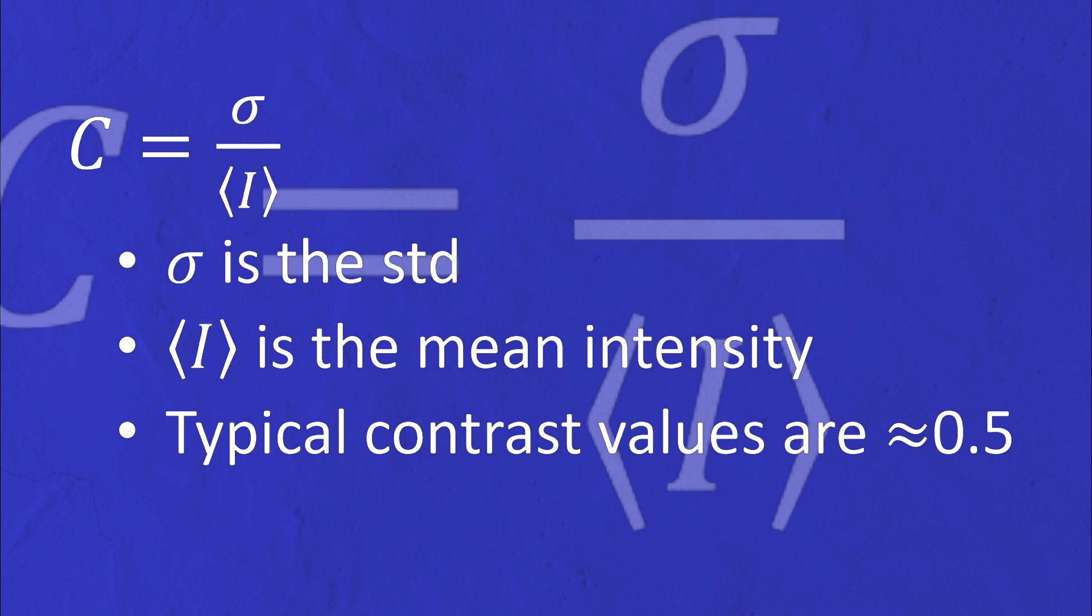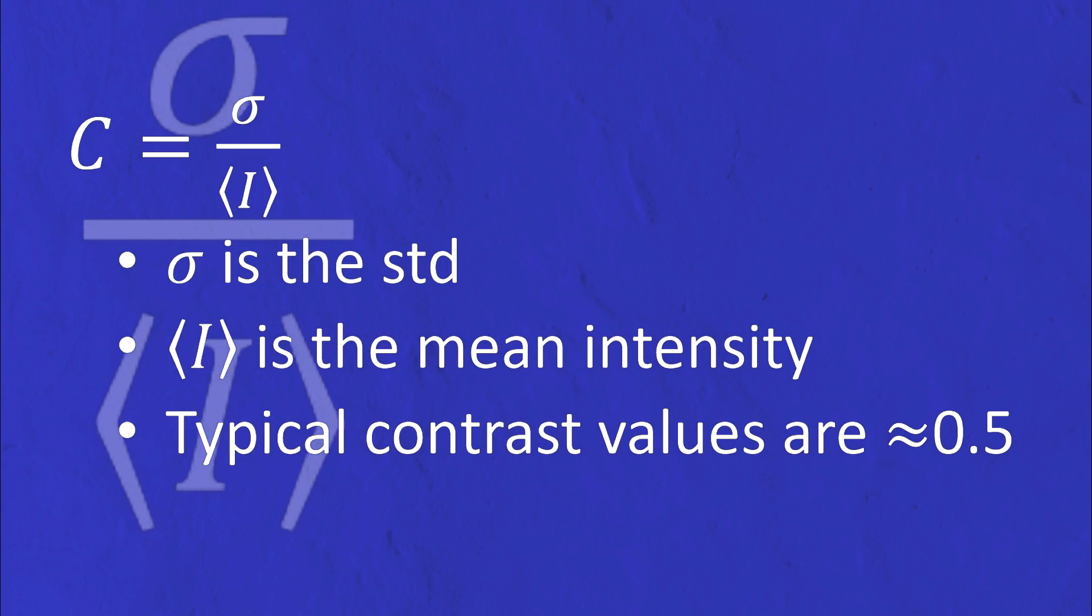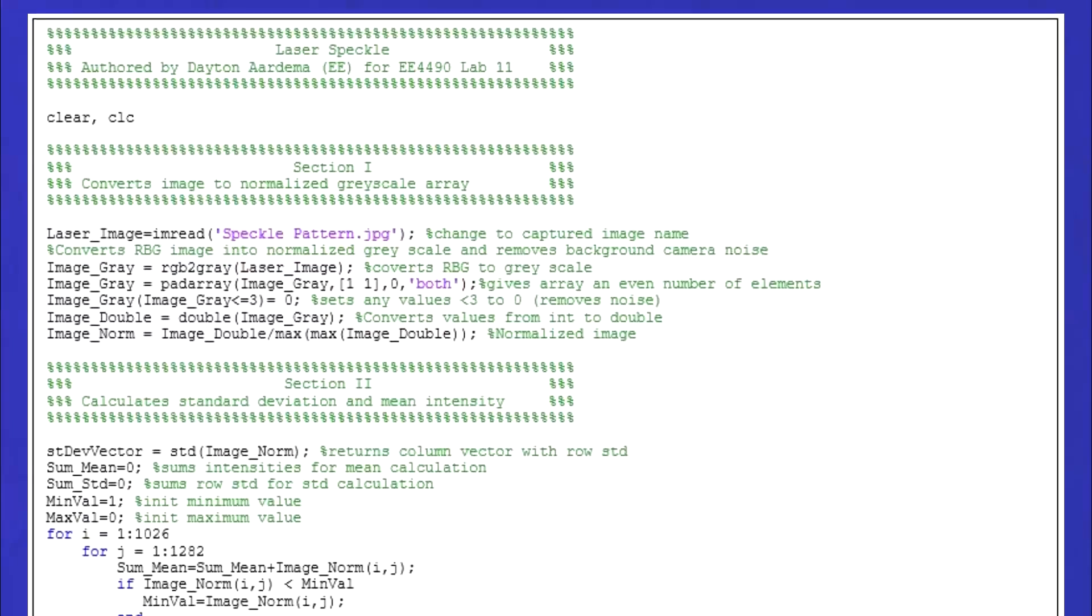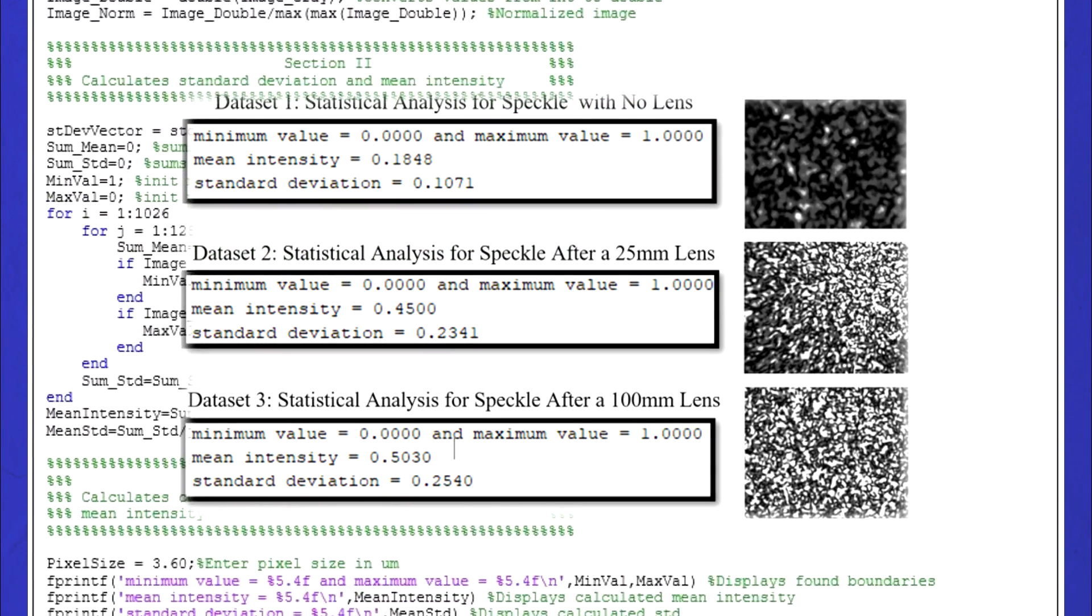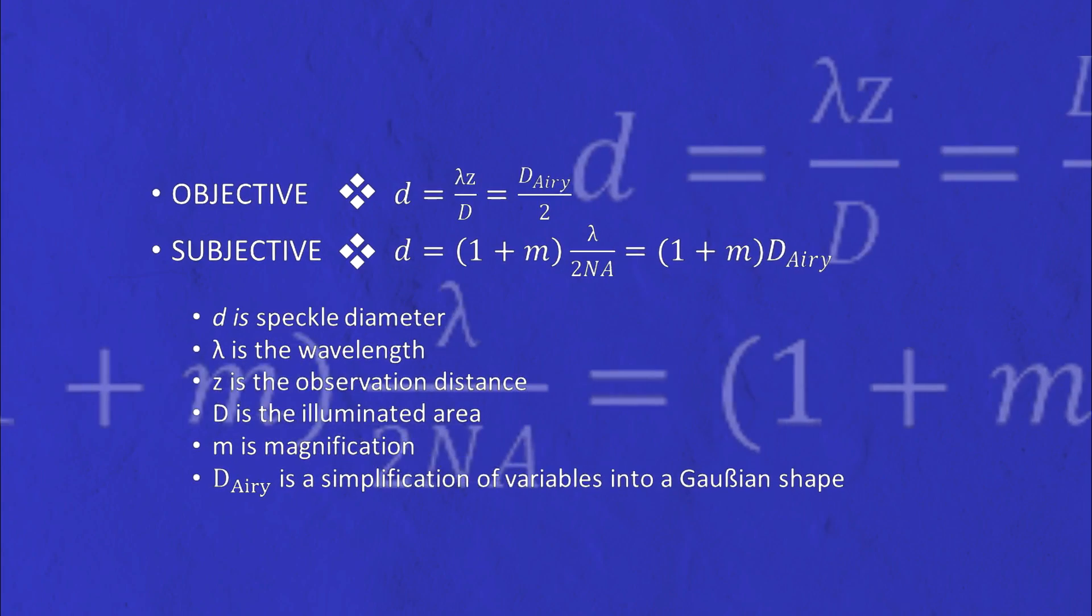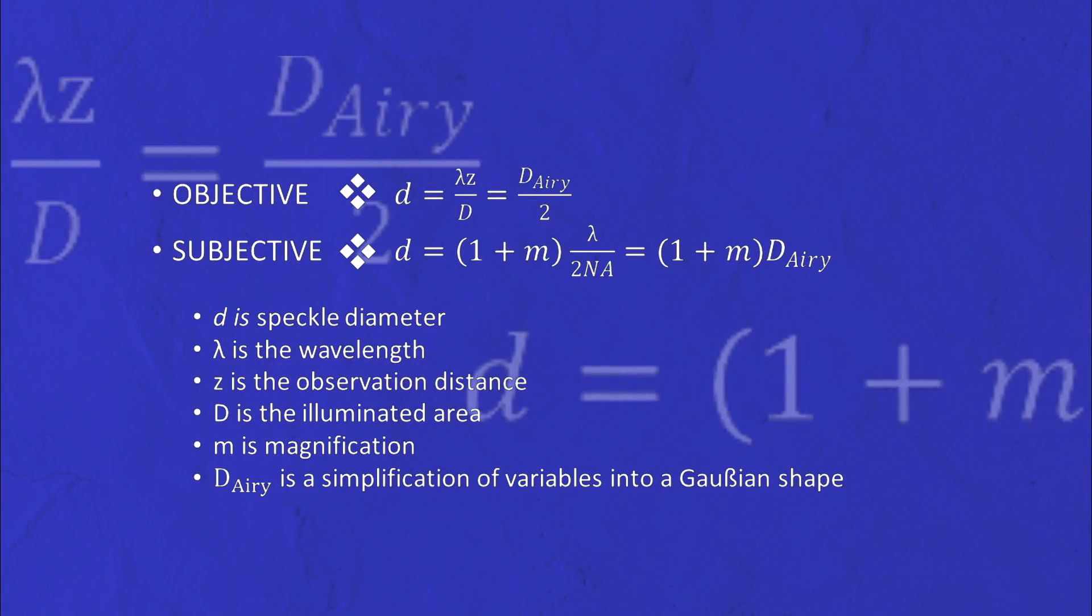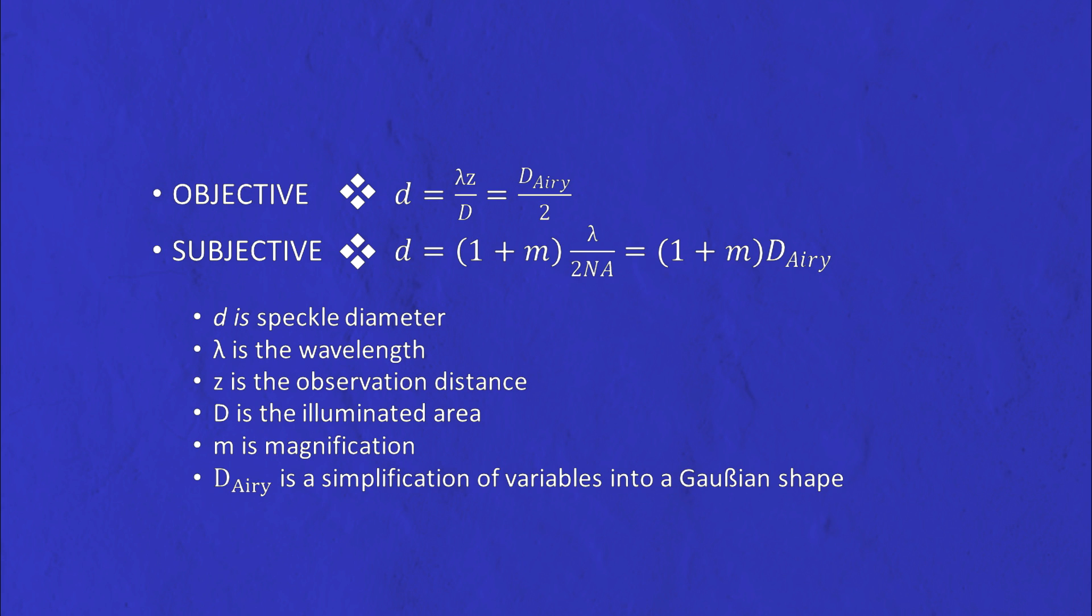The first is contrast, which is defined as the quotient of the standard deviation of the random distribution and the mean intensity. I wrote a program that calculates these values using images I took earlier. We may also mathematically represent the diameter of each speckle dot by these two equations, for objective speckle and subjective speckle respectively. We can also simply measure the speckle size on our photograph if we know the real size of each pixel.